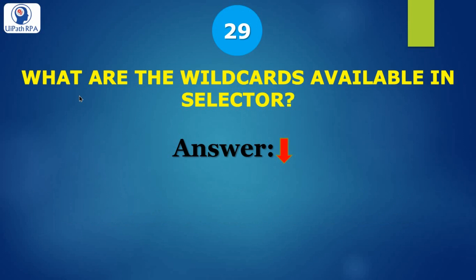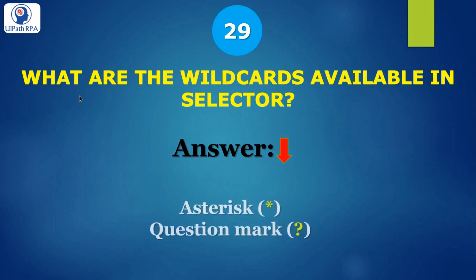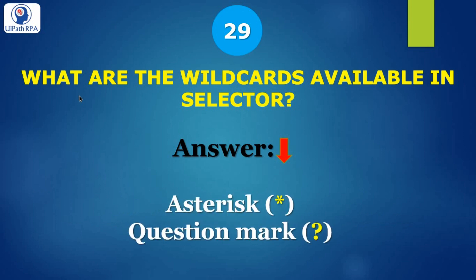Question 29: what are the wildcards available in selectors? There are two wildcards: asterisk (*) and question mark (?).